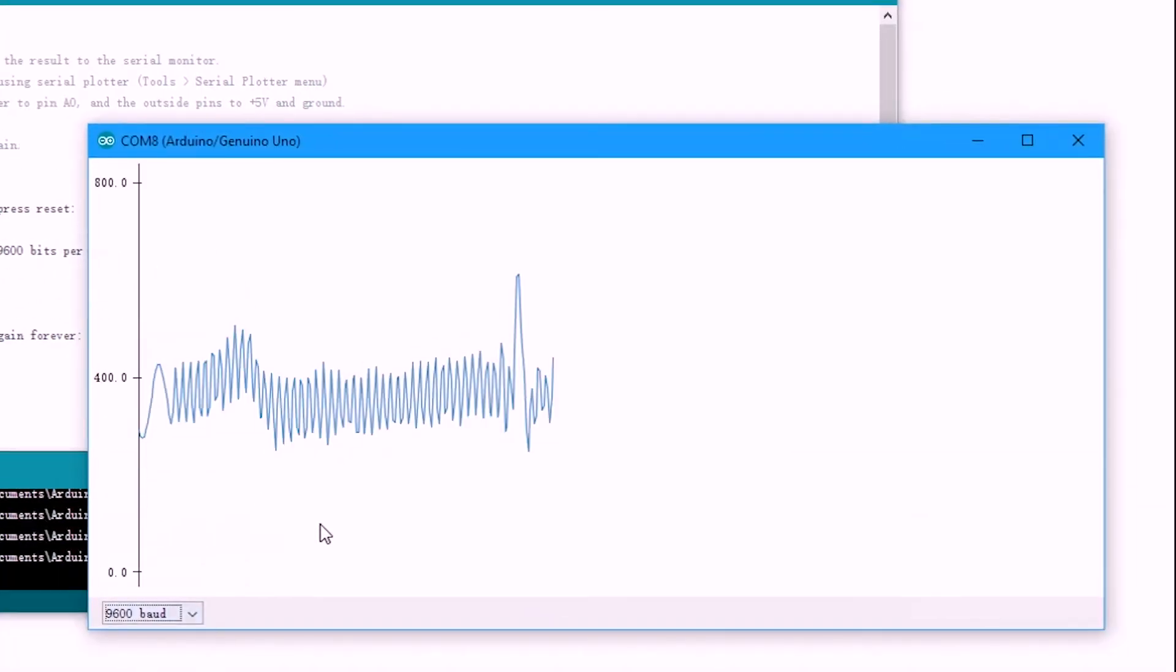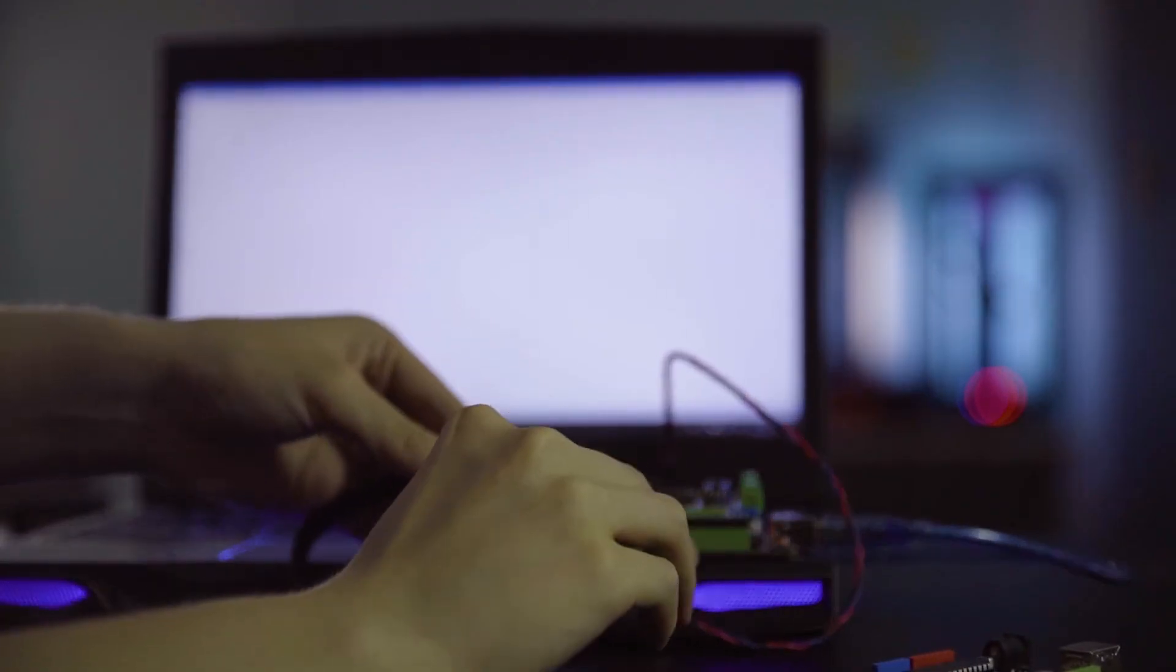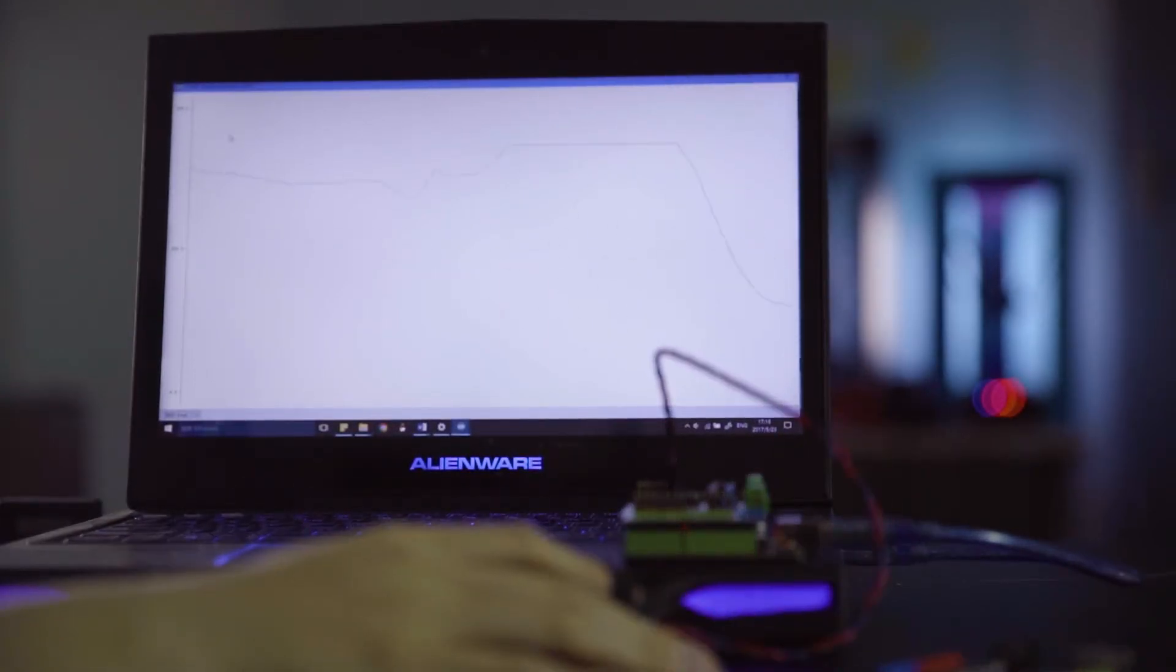Once successfully uploaded, open the serial plotter. We will be able to see some random readings. Now put the sensor onto finger or attach to skin, hold still and wait for a few seconds. Heartbeat will be shown in the monitor.